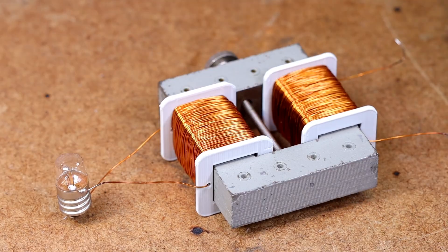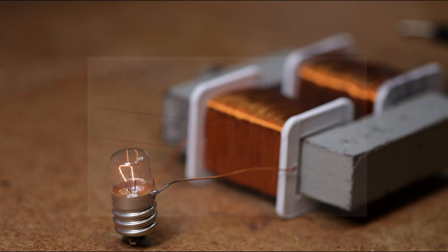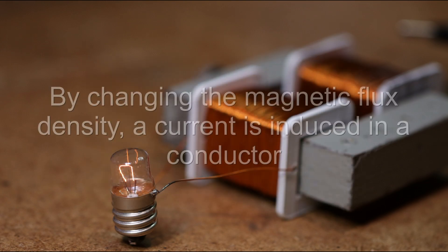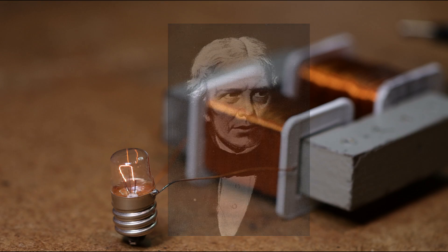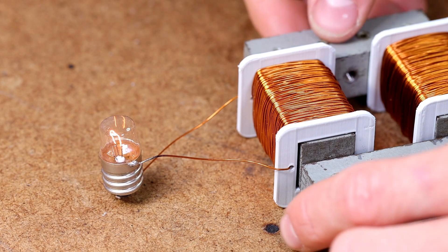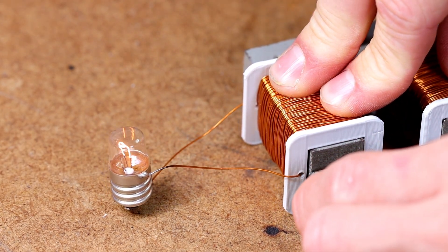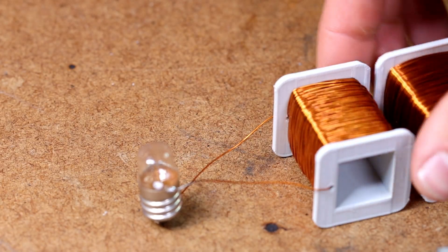Before we start with the experiment, let's talk briefly about the theory. This is a normal transformer — the simplest form of wireless power transmission. An alternating current flows through a coil. The changing current flow creates a changing magnetic field around the coil. By changing the magnetic flux density, a current is induced in a conductor — at least this is what Michael Faraday said. So in a transformer, a current flow is converted into a magnetic field and the magnetic field is converted back into a current flow. Though this is kind of wireless energy transmission, it works very efficiently in a transformer. But if we remove the iron core, the efficiency decreases enormously, and when we increase the distance between the two coils there is no noticeable transmission.